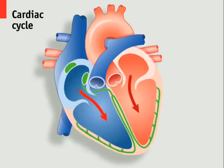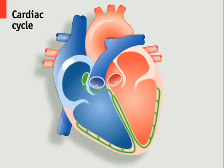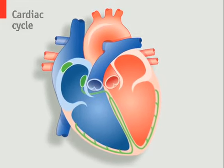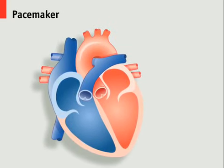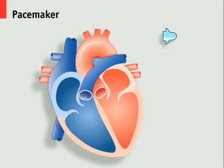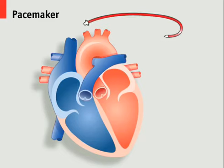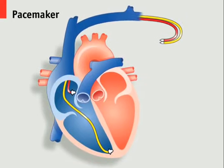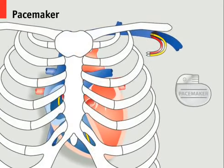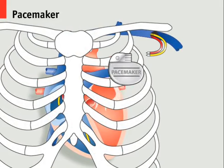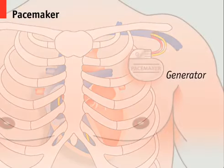When the sinoatrial node fails to function correctly, an artificial pacemaker can be fitted to help regulate the heartbeat with small, evenly timed electric shocks. This involves implanting electrodes into one or more of the heart's chambers by inserting leads into a vein near the collarbone and implanting a device called the generator just under the skin.